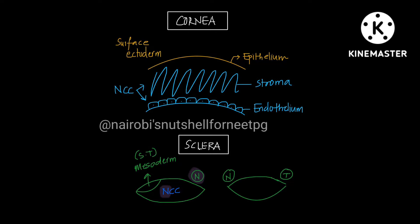Next part is sclera. Sclera has a nasal side and a temporal side. The whole sclera is from neural crest cells, except only the superotemporal part — abbreviated ST — which is from mesoderm. The rest, towards the nasal side, is from neural crest cells. Don't confuse N with neuroectoderm here — nasal and neural crest cells rhyme together as a memory aid.